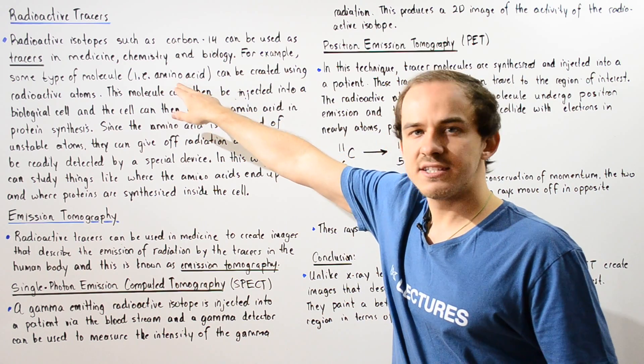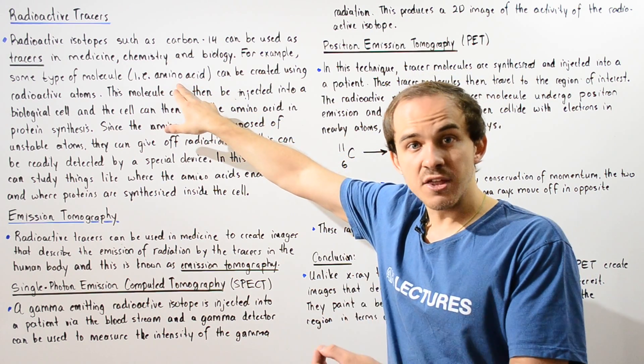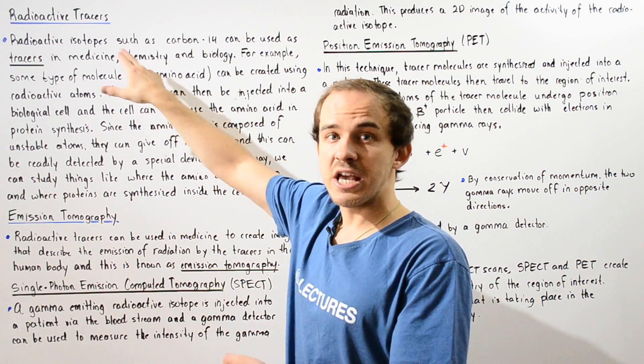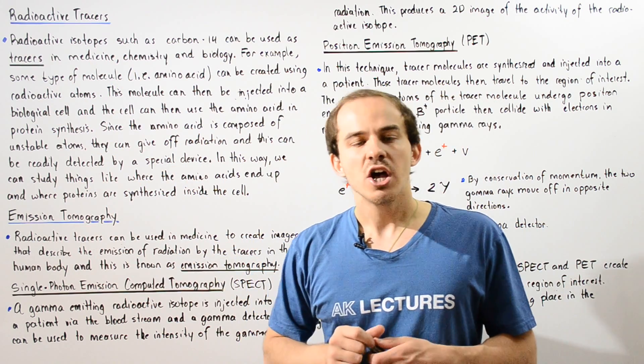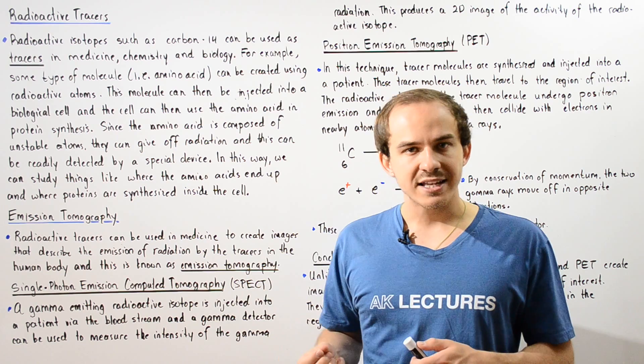Some type of molecule, let's say an amino acid, can be synthesized artificially using our tracer atoms. And this molecule amino acid becomes known as the tracer amino acid.